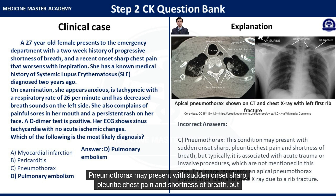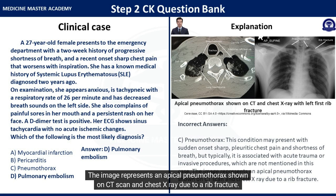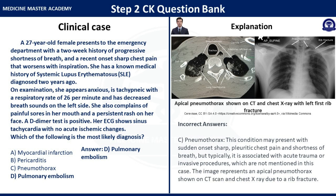Pneumothorax may present with sudden-onset sharp pleuritic chest pain and shortness of breath, but typically it is associated with acute trauma or invasive procedures, which are not mentioned in this case. The image represents an apical pneumothorax shown on CT scan and chest X-ray due to a rib fracture.